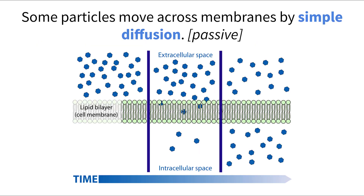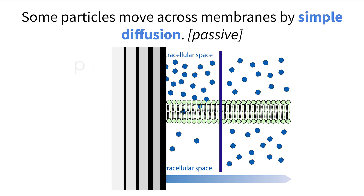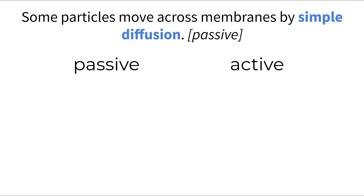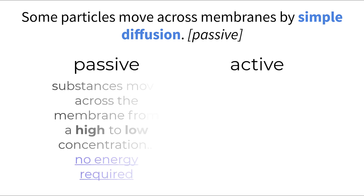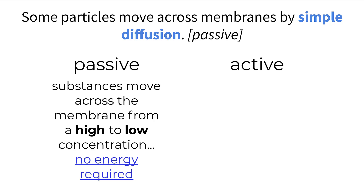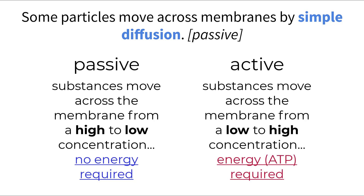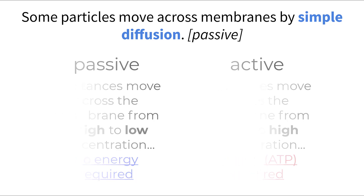The cell membrane, being the barrier that separates the inside of the cell from the outside, helps control the movement of particles in both directions. There are many ways that particle movement can happen across the cell, but let's first categorize all movement into two types: passive or active. Passive movement describes when substances make their way across the membrane without the use of cellular energy, and active movement describes when substances require cellular energy, like ATP, to move from one side of the membrane to another.